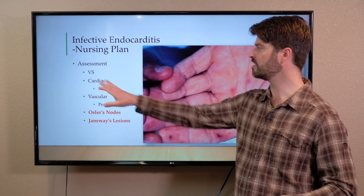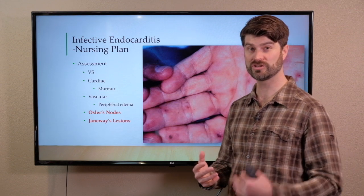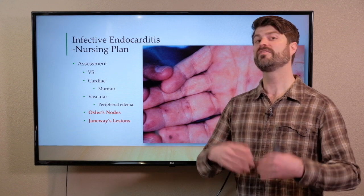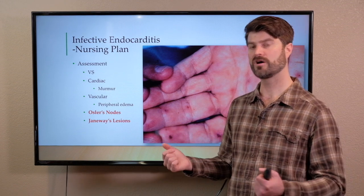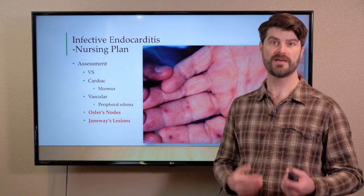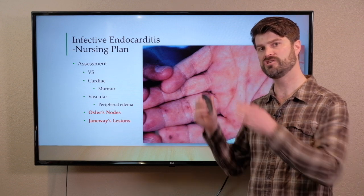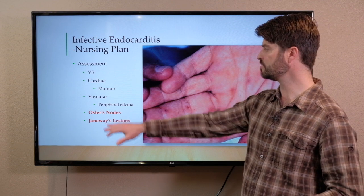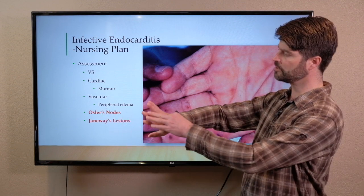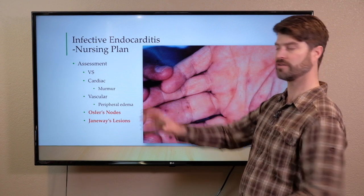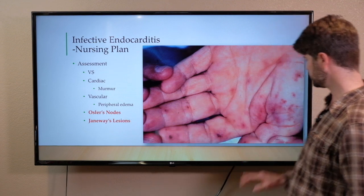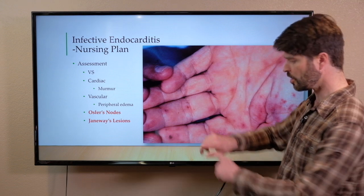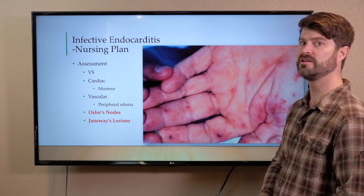For vascular assessment, because patients have regurgitation, they can develop symptoms — kind of like mitral valve prolapse — that mimic congestive heart failure. So peripheral edema could definitely become part of the presentation for infective endocarditis. Also assess for the Osler's nodes that can occur over the knuckles or joints on the fingers, the Janeway's lesions — those reddened areas — and the splinter hemorrhages in the fingernails.